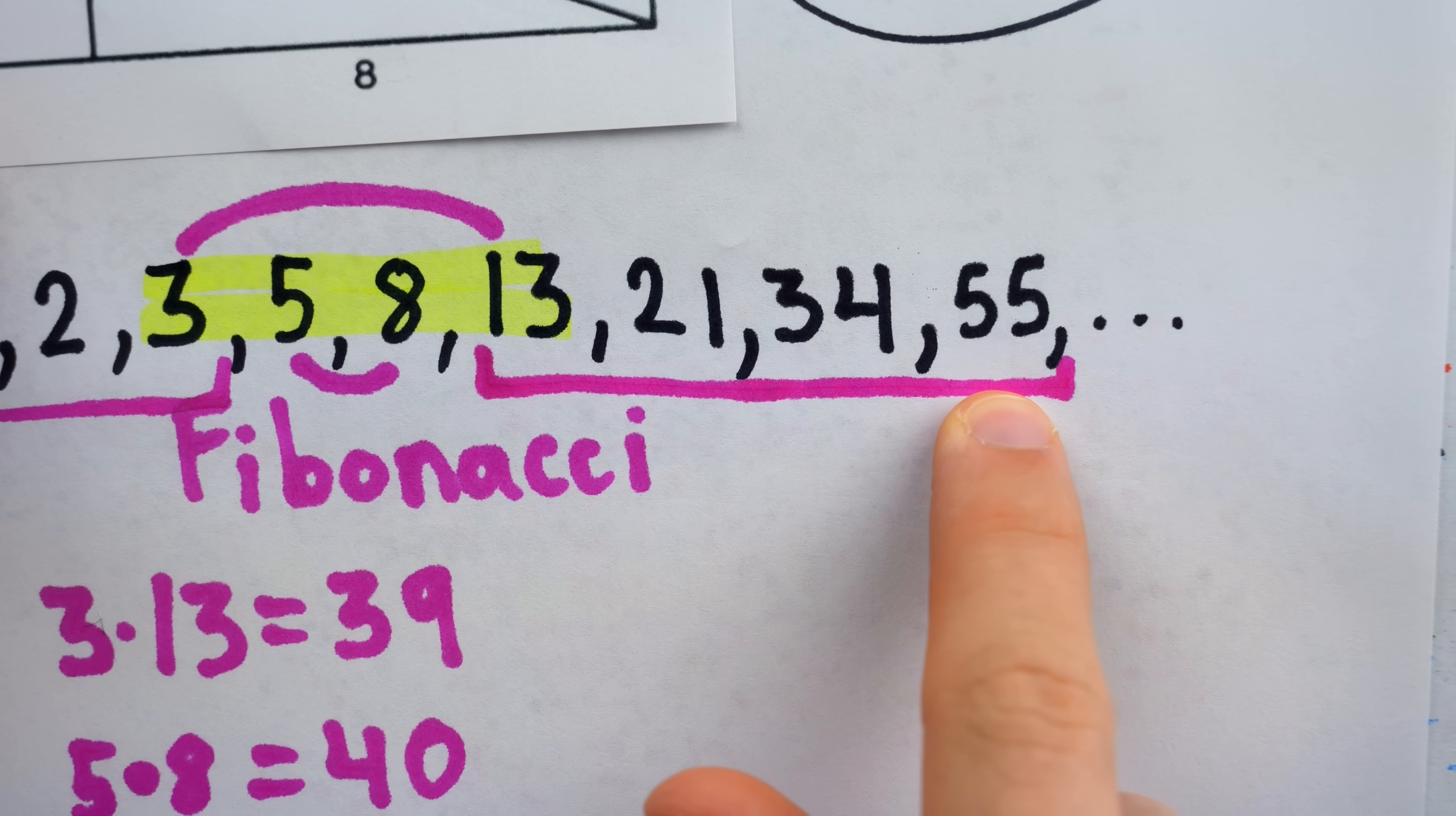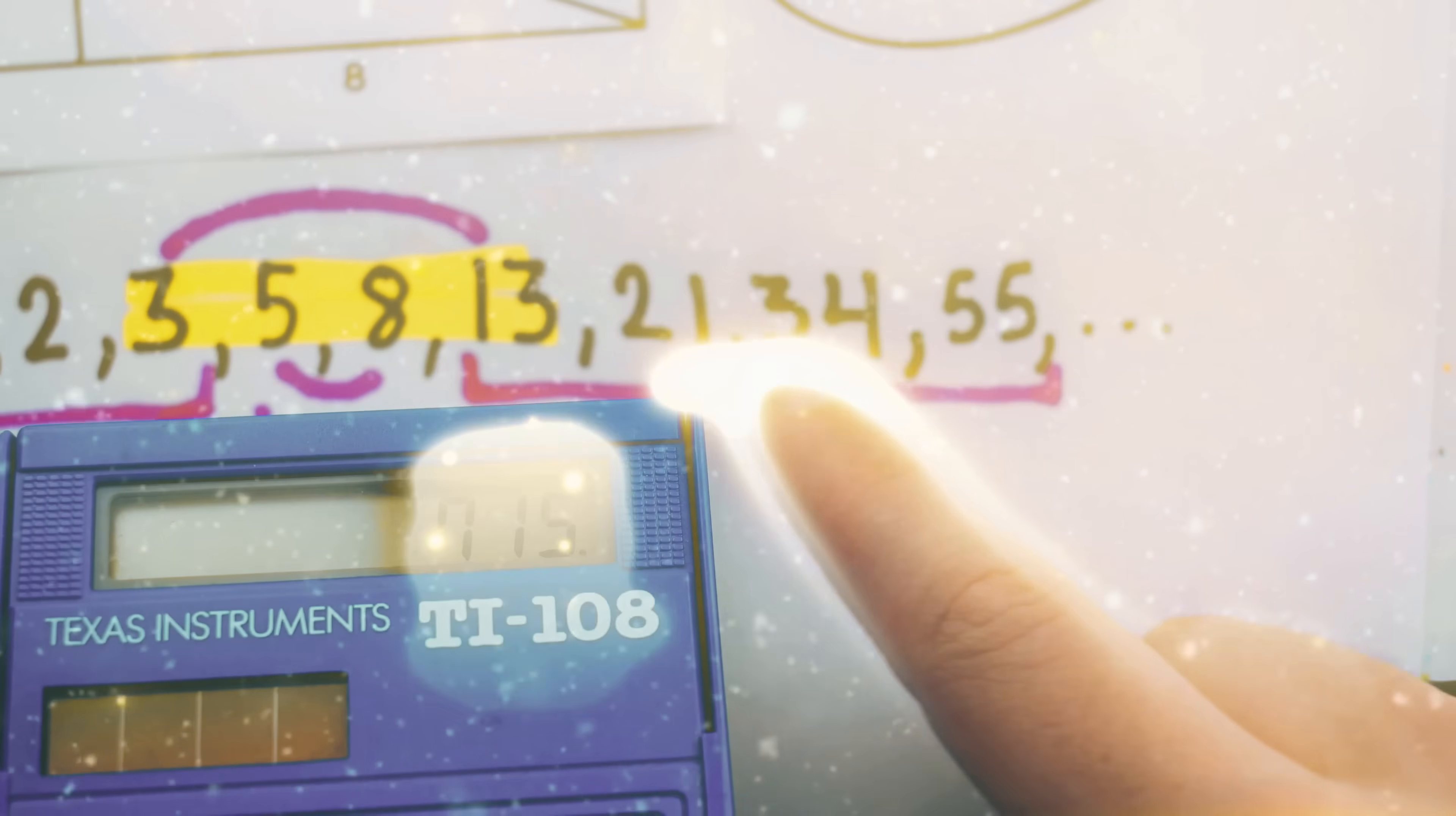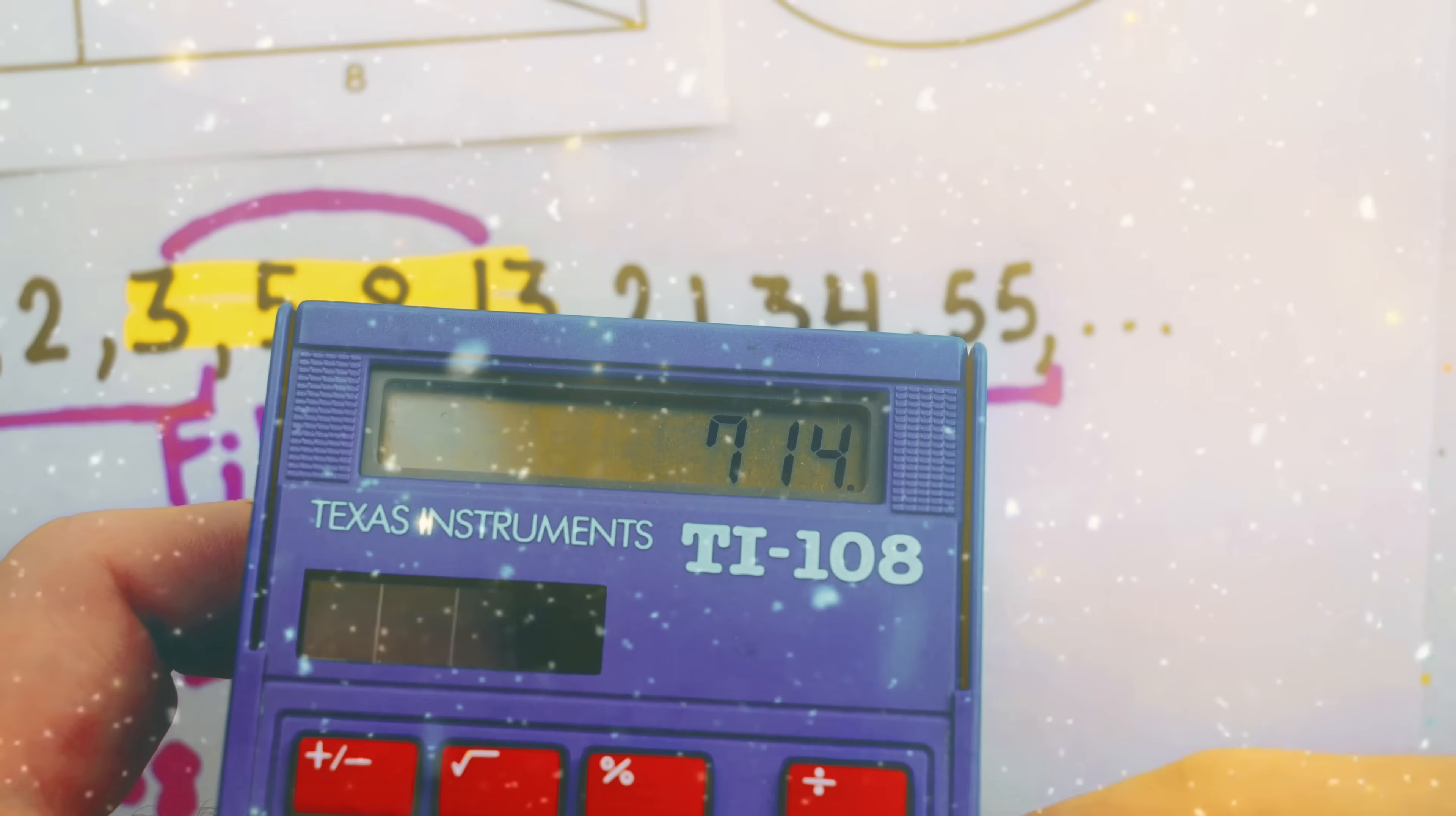In this case, looking at these 4 numbers, multiply the outer pair together to get 55 times 13, that's 715, and then multiply the inner 2 together, 21 times 34. Again, you see the difference is 1.